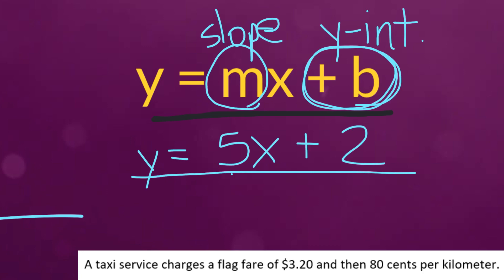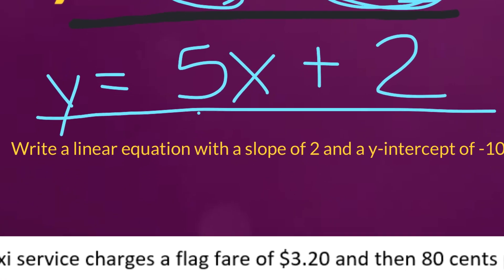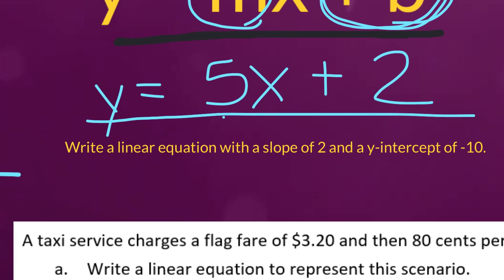So you might get a question like this. Write a linear equation with a slope of 2 and a y-intercept of negative 10. So since our slope is 2, that means our coefficient in front of x would be a positive 2. And then our y-intercept is negative 10. So that means instead of adding, we're going to be subtracting. So it'll be 2x minus 10.